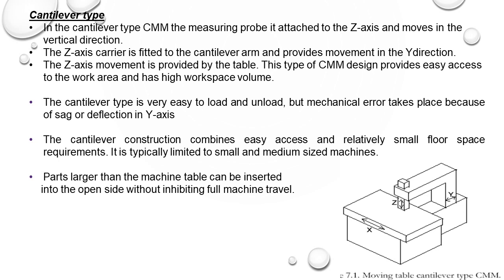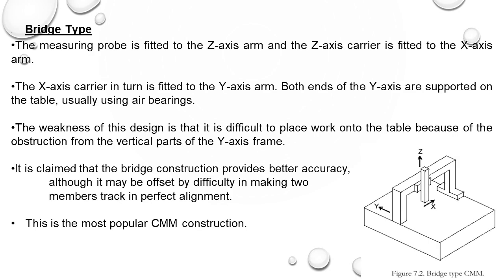Cantilever type is very easy to load and unload, but mechanical error takes place because of sag or deflection of the Y-axis — though the design reduces this, some deflection may still come. The cantilever construction also provides easy access and small floor space requirements. Parts larger than the machine table can be inserted into the open side without inhibiting full machine travel.